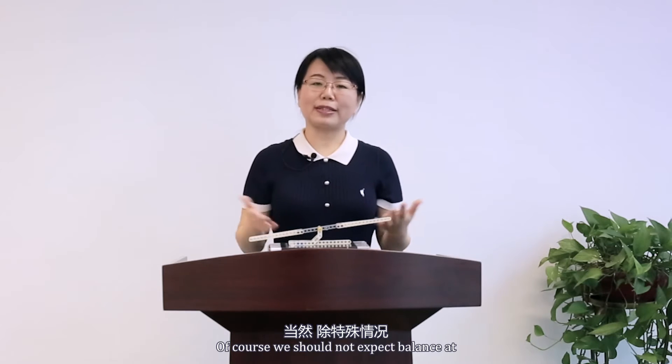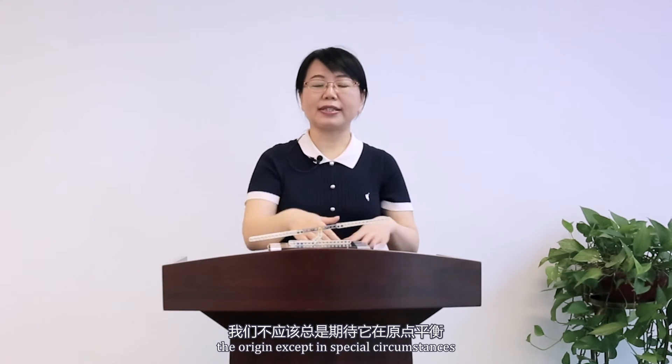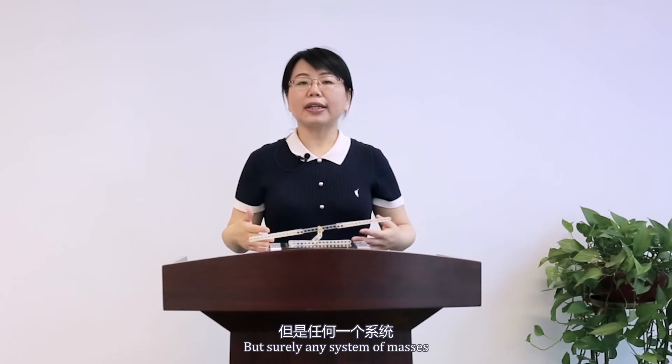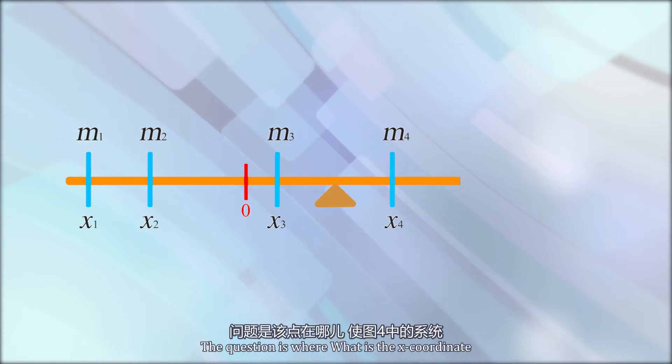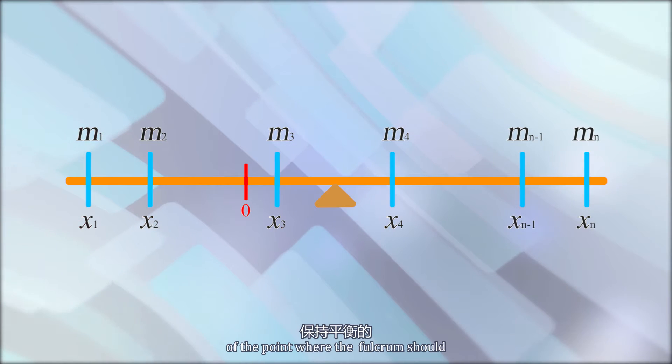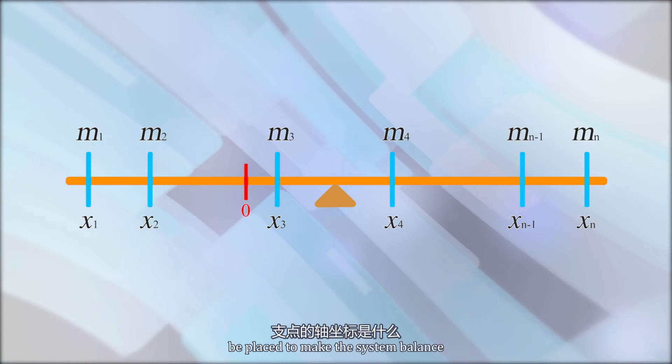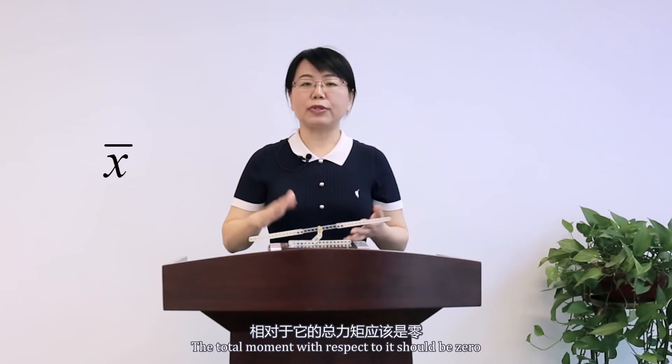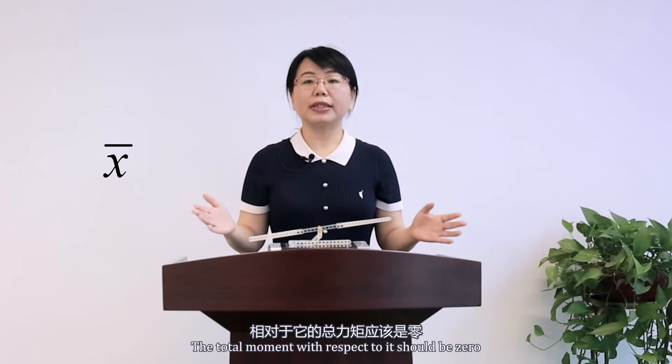Of course, we should not expect balance at the origin except in special circumstances. But surely, any system of masses will balance somewhere. The question is where? What is the x-coordinate of the point where the fulcrum should be placed to make the system balance? Let's call the desired coordinate x-bar. The total moment with respect to it should be zero.